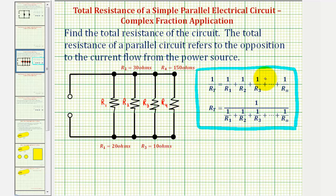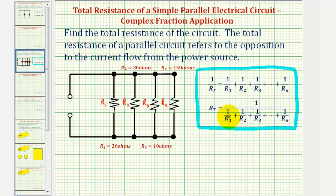Looking at this first formula, we have one divided by the total resistance, or R sub T — the reciprocal of R sub T — is equal to the sum of the reciprocals of each individual resistance in the system. But we're going to use the second formula. On the right side, we have a complex fraction because we have fractions within fractions. The total resistance R sub T is equal to one divided by the sum of the reciprocals of each individual resistance in the system.